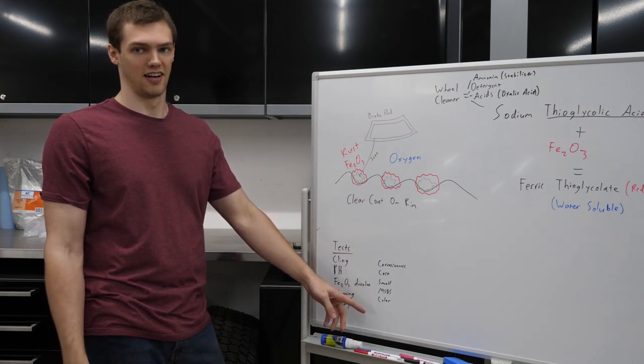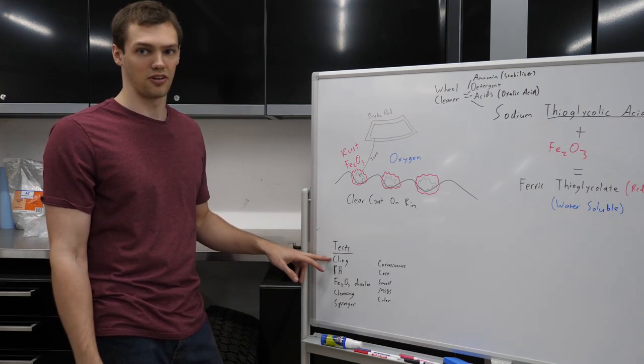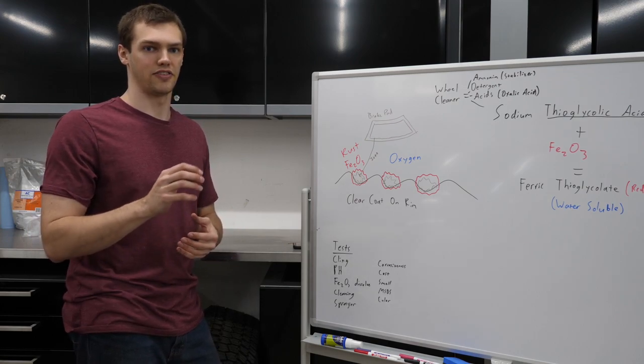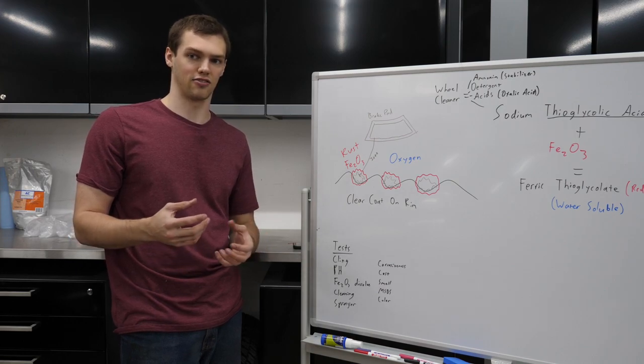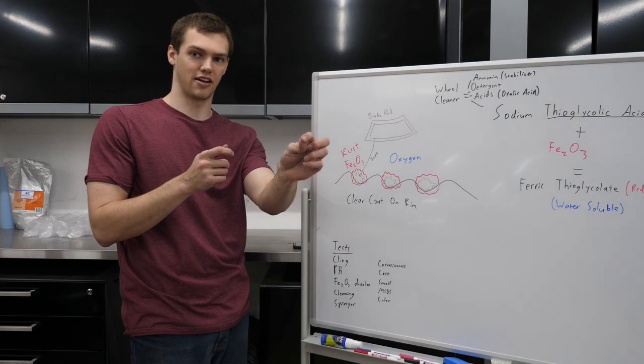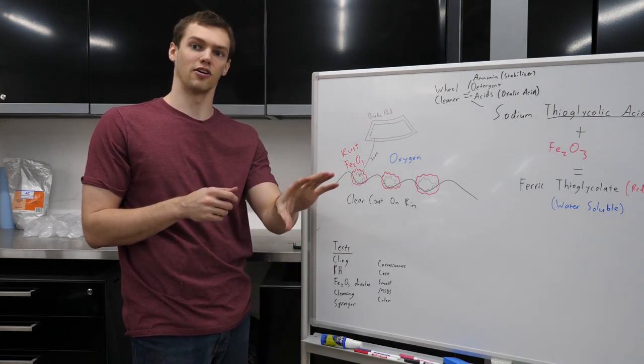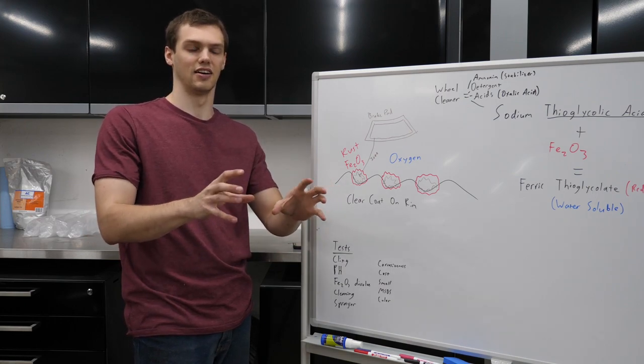Cling, pH, iron dissolving, cleaning, sprayer, corrosiveness, cost, smell, MSDS, and color. So this is my starting list of everything I want to find out and do experiments on. So cling, I want to know how well does whatever I'm spraying stay to where I'm spraying it, essentially. So think about if you have something that's an extremely runny liquid and it's not even misting, you shoot a little jet, right? It'll hit that and just run right down and it's not going to stick to where you're spraying it and react to it.